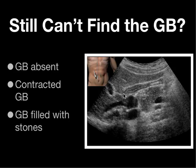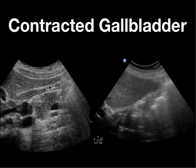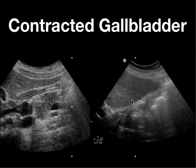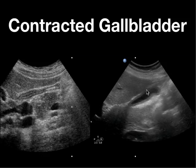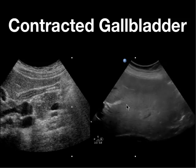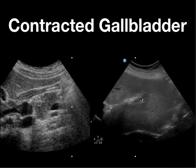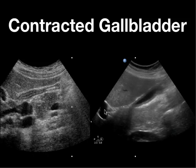It's also possible that the patient could have an ectopic location for their gallbladder. Here are some examples of contracted gallbladders, which can be very difficult to find — you're going to have to rely heavily on the main lobar fissure and the anatomic association with the right portal vein. Here's another patient who had just eaten; you can see there's still some bile within the lumen, and you can see the main lobar fissure and the right portal vein confirming this is the gallbladder.